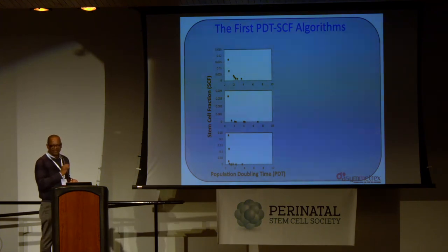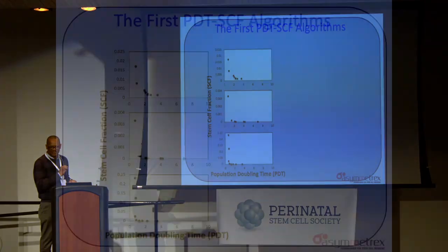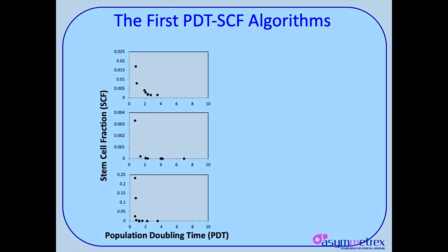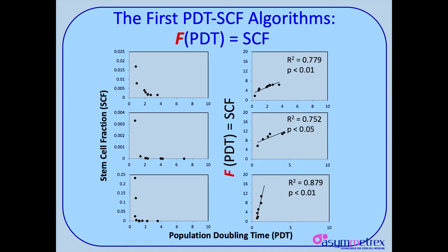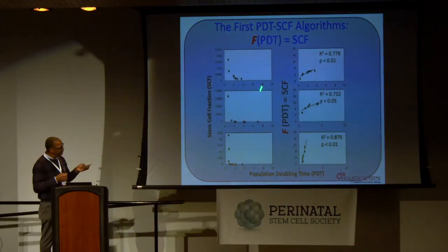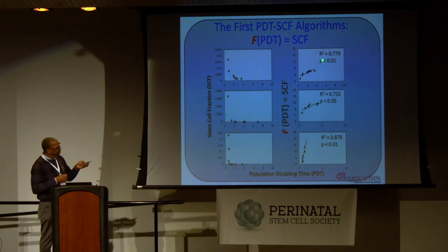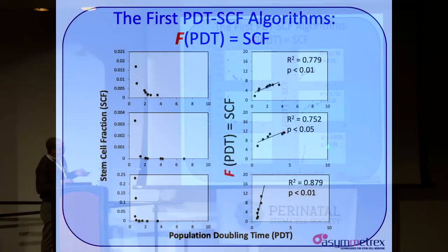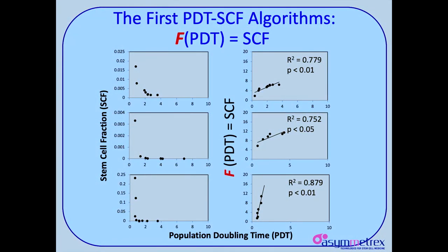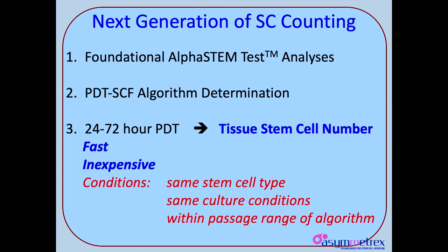The reason I'm confident that we have algorithms is because we can linearize this data quite easily, and with the same conversion factor we get these plots. So we have this algorithm where if you put in the population doubling time, you get out this other factor which is based on stem cell fraction, and we get these fairly well-specified linear plots. They're not the same — they're going to be different for different stem cells and different conditions — but once we've got one, I can talk about this slide.